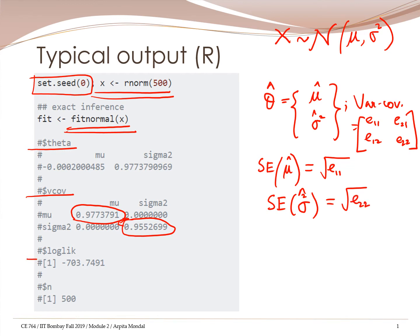This term, log-likelihood, gives the maximized log-likelihood. But we do see a negative sign before the number, which means it's actually the minimized value of the log-likelihood function. Maximizing a function is equivalent to minimizing the negative of the function. So this is the minimized log-likelihood value, and the sample size n is 500, because we had generated 500 random numbers which belong to the normal distribution.